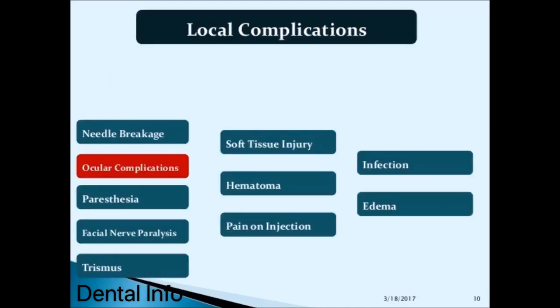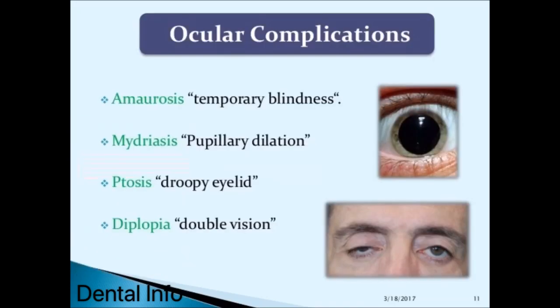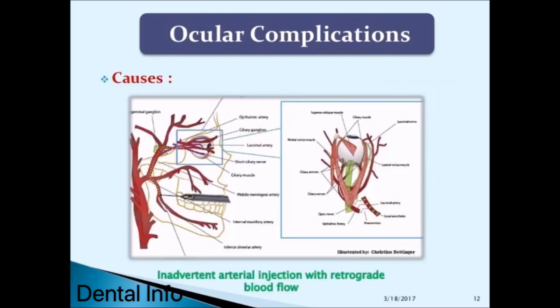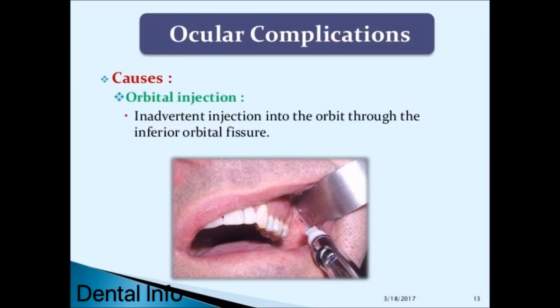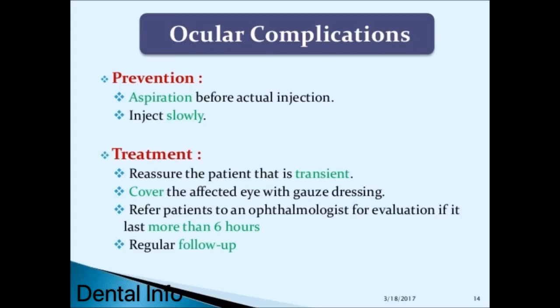Ocular complications include amaurosis (temporary blindness), mydriasis (pupillary dilation), ptosis (droopy eyelid), and diplopia (double vision). Causes include inadvertent arterial injection with retrograde blood flow and inadvertent injection into the orbit through the inferior orbital fissure. Prevention involves aspiration before actual injection and injecting slowly.